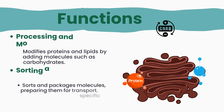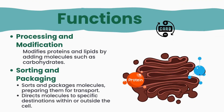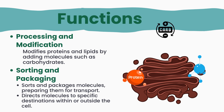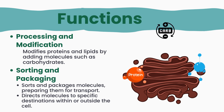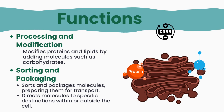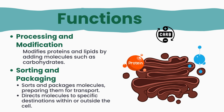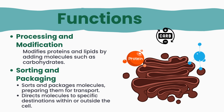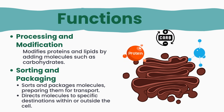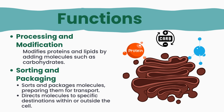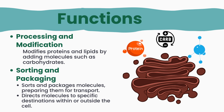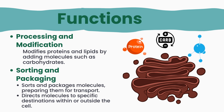The Golgi apparatus is a central hub within the cell, orchestrating crucial processes to ensure proper cellular function. One vital function is processing and modification — the Golgi apparatus takes raw proteins and lipids and refines them, adding vital molecules like carbohydrates. This modification is pivotal as it affects the behaviour and function of these biomolecules.